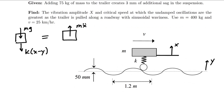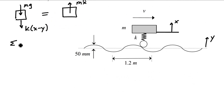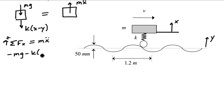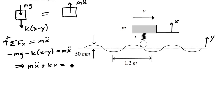Summing forces in the x direction with upward positive convention and setting that equal to mx double-dot, I get: minus mg minus k times (x minus y) equals m times x double-dot. Rewriting this in standard form: mx double-dot plus k times x equals minus mg plus k times y.